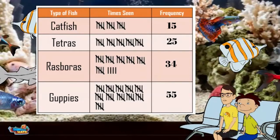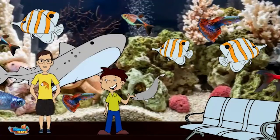I sure love those guppies and there are a lot of them! The frequency table is an easy way to collect data and even easier to read. It shows you what type of fish you saw the most and the ones you saw the least. Now you officially know how to use frequency tables!